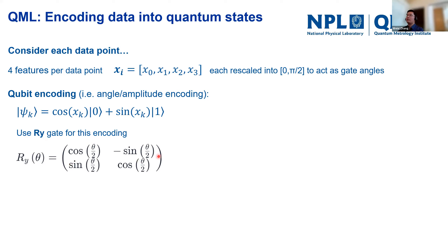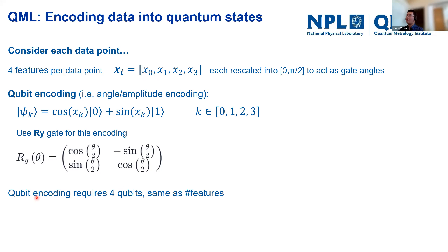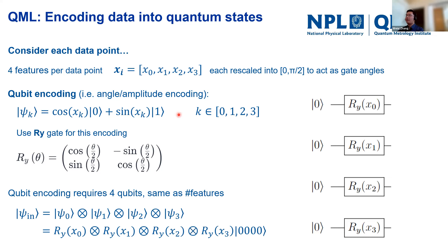Since there are four features, we need four qubits to encode them — one qubit per feature. For each feature we simply use an RY gate to encode it, starting from the zero state, giving us the initial state equation for the encoded data.